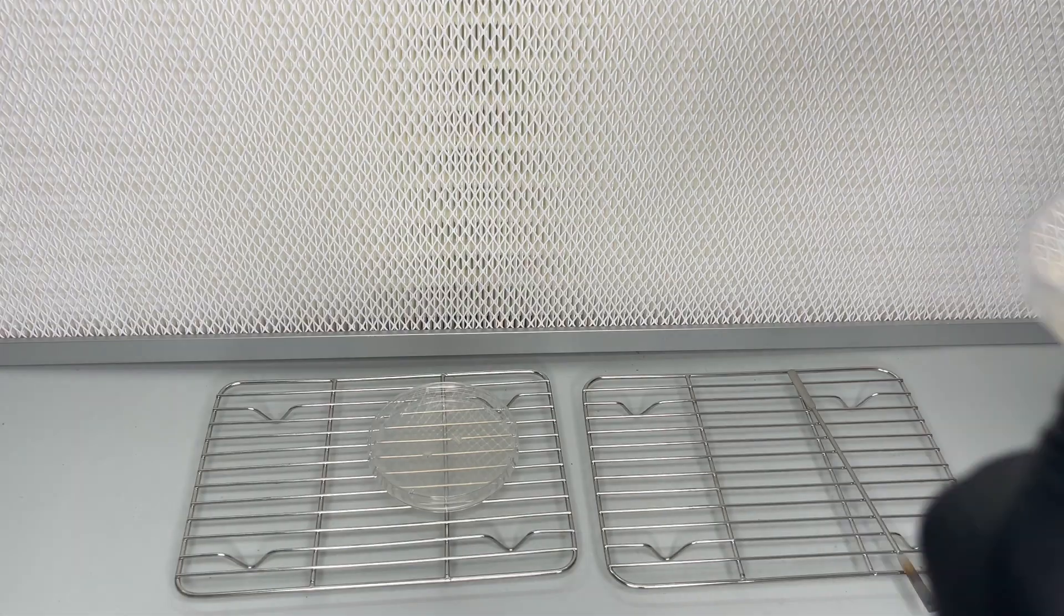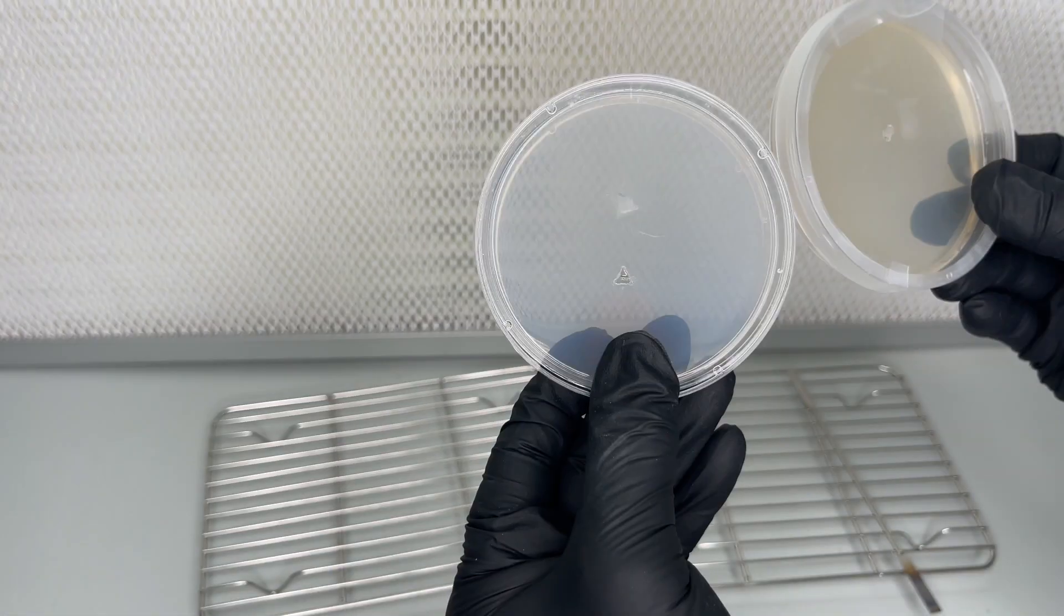The nutrient agar plate is wrapped in parafilm and allowed to grow at 75 to 78 degrees Fahrenheit for one to two weeks.